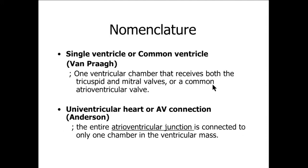There have been so many debates on the definition of a single ventricle or univentricular heart. According to Van Praag, a single ventricle or common ventricle is one ventricular chamber that receives both the tricuspid and mitral valve, or a common atrioventricular valve. By this definition, mitral atresia or tricuspid atresia was not included. But Anderson emphasized the atrioventricular junction.